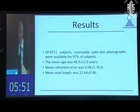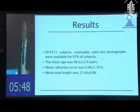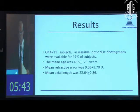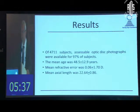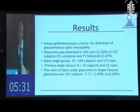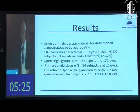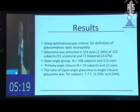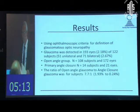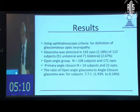Regarding the prevalence of glaucoma, of the 4,711 subjects we had accessible photographs for almost 97 percent. The mean age was 48.5 years, mean refractive error was 0.06 diopters, and mean axial length was 22.64 millimeters. Glaucoma was detected in 193 eyes — 2.18 percent — across 122 subjects. Open angle glaucoma was found in 108 subjects and primary angle closure glaucoma in 14 subjects, giving a ratio of open angle to angle closure glaucoma of 7.7:1 for central India.